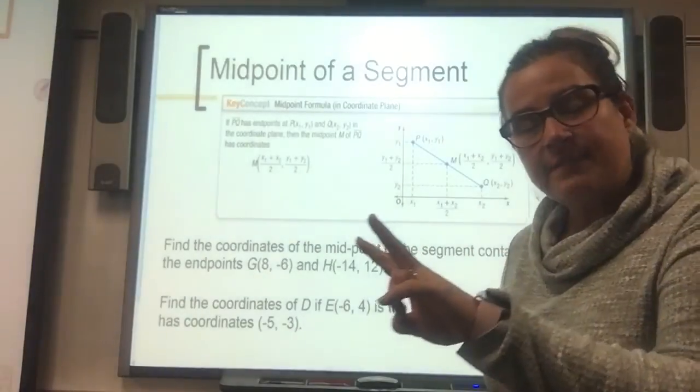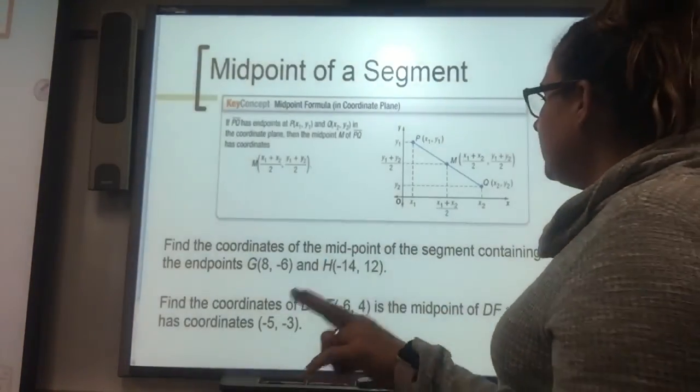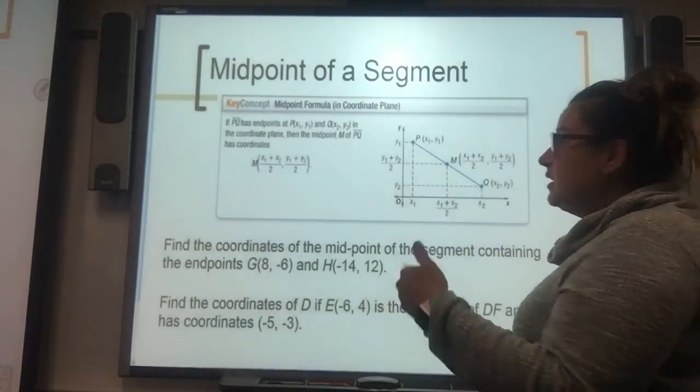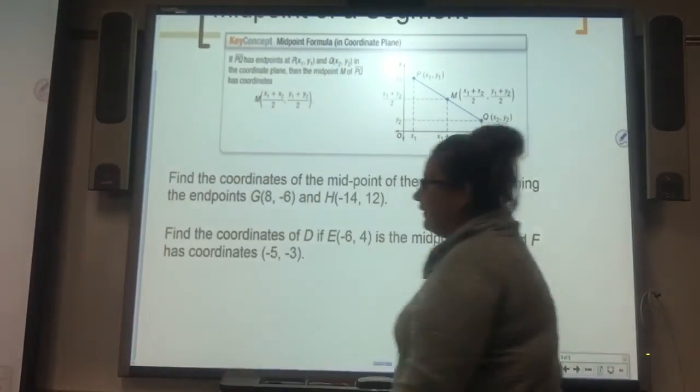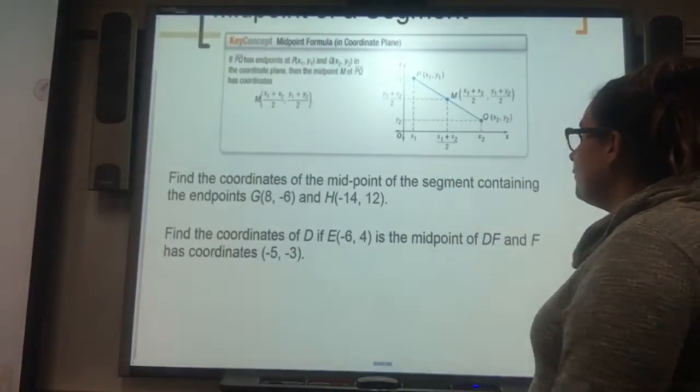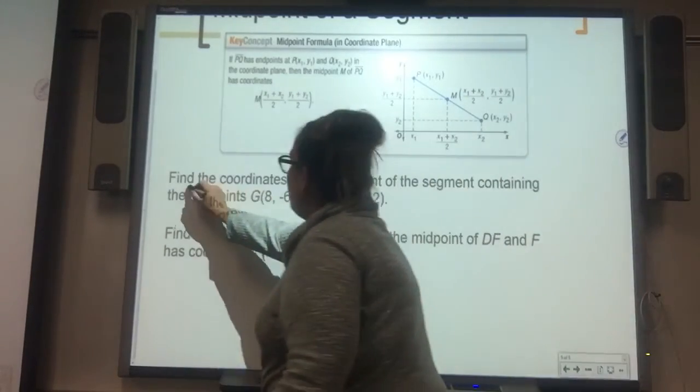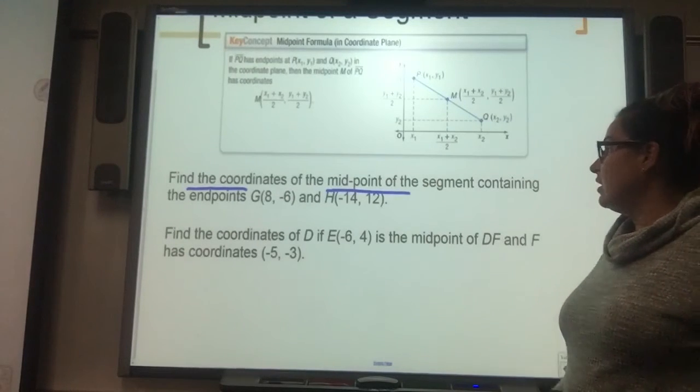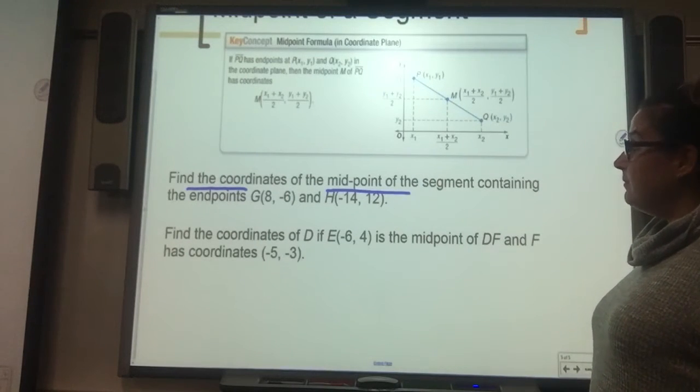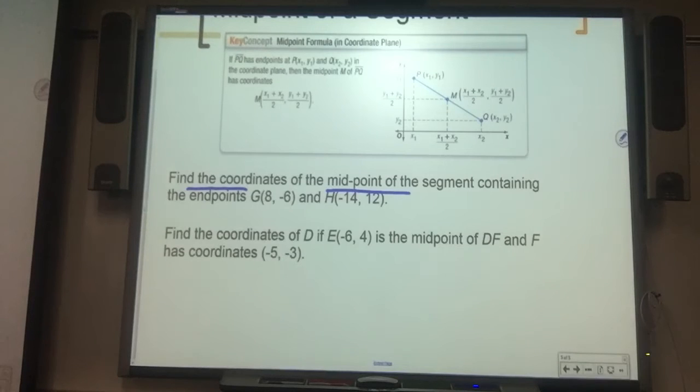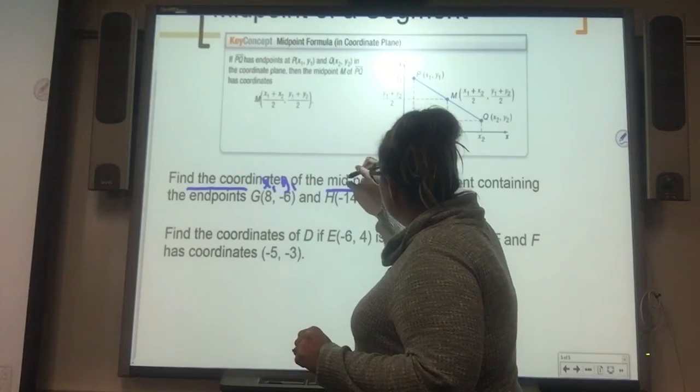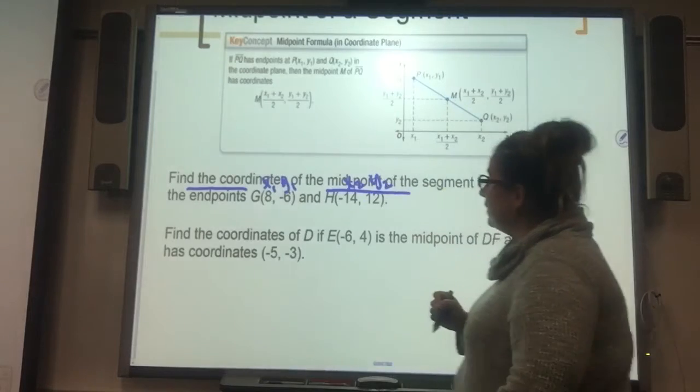I'm going to walk you through two different types of problems that work with the midpoint. One where we want to find the midpoint, and one where we're given the midpoint. So we're going to go through two examples of that and then have you work on your practice. The first one says find the coordinates of the midpoint. So it's important that we're reading our directions. I want to find the midpoint. What that means is I need to label my points. So this is x sub 1, y sub 1, x sub 2, y sub 2. And I'm going to fill it in.